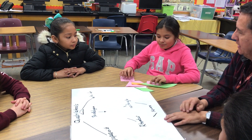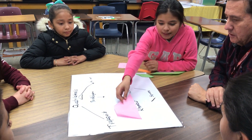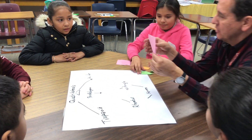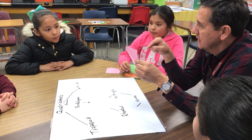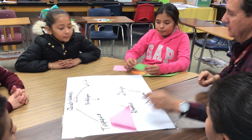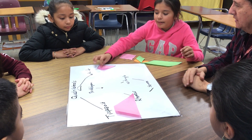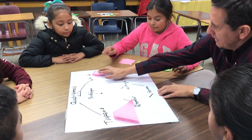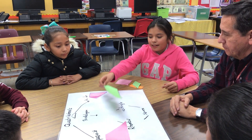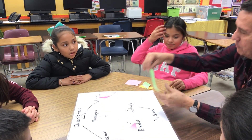Let's put this in the graphic organizer. This is a trapezoid — how many pairs of parallel sides? Just one pair of parallel sides. This is a kite — that's a quadrilateral called a kite. And that's a parallelogram.